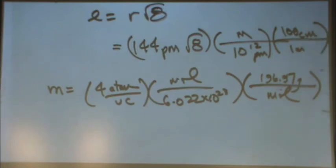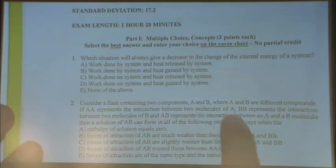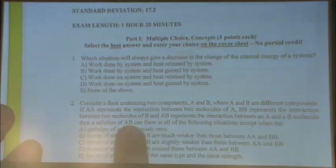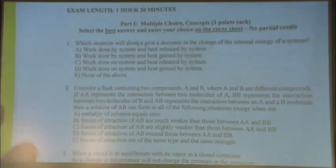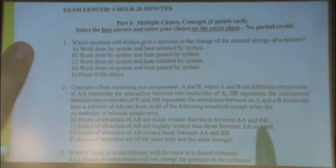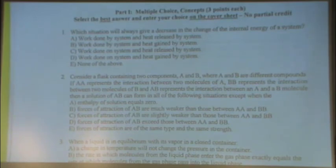Who's that? Yes? Page 26. I think you're talking about this long one right here. Consider a solution of two components A and B where A and B are different compounds. If AA represents the interaction between two molecules of A, BB between two molecules of B, and AB between A and B, then the solution AB can form in all the following situations except, so we're going to try to find the one where it does not happen. When will that not happen?